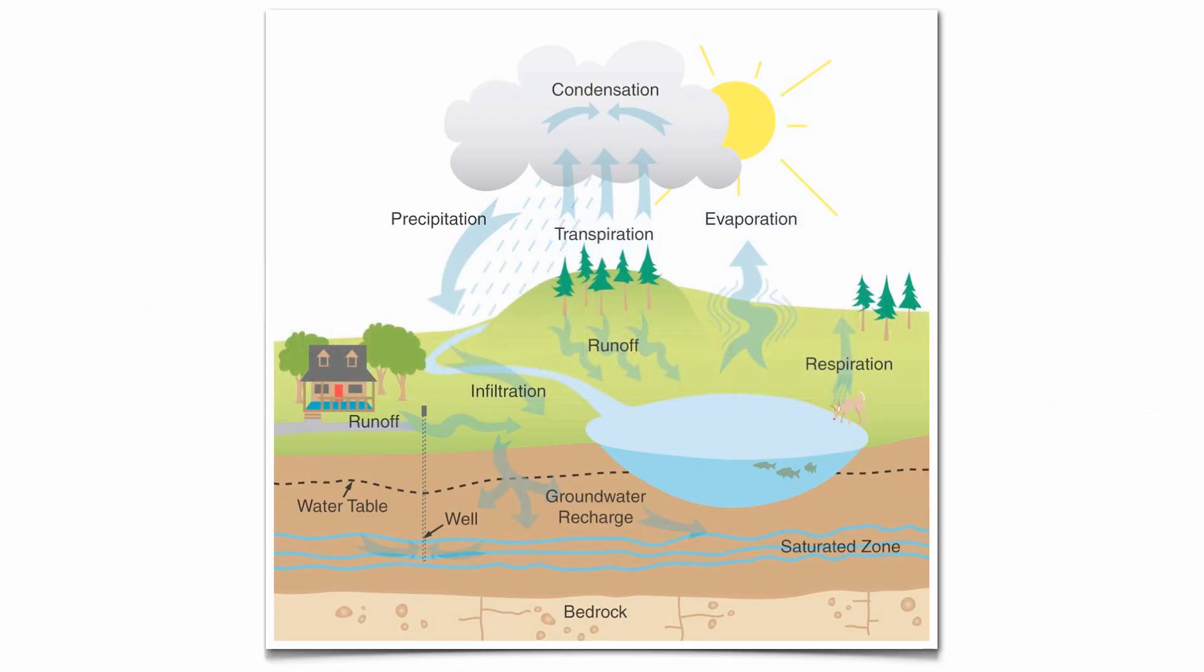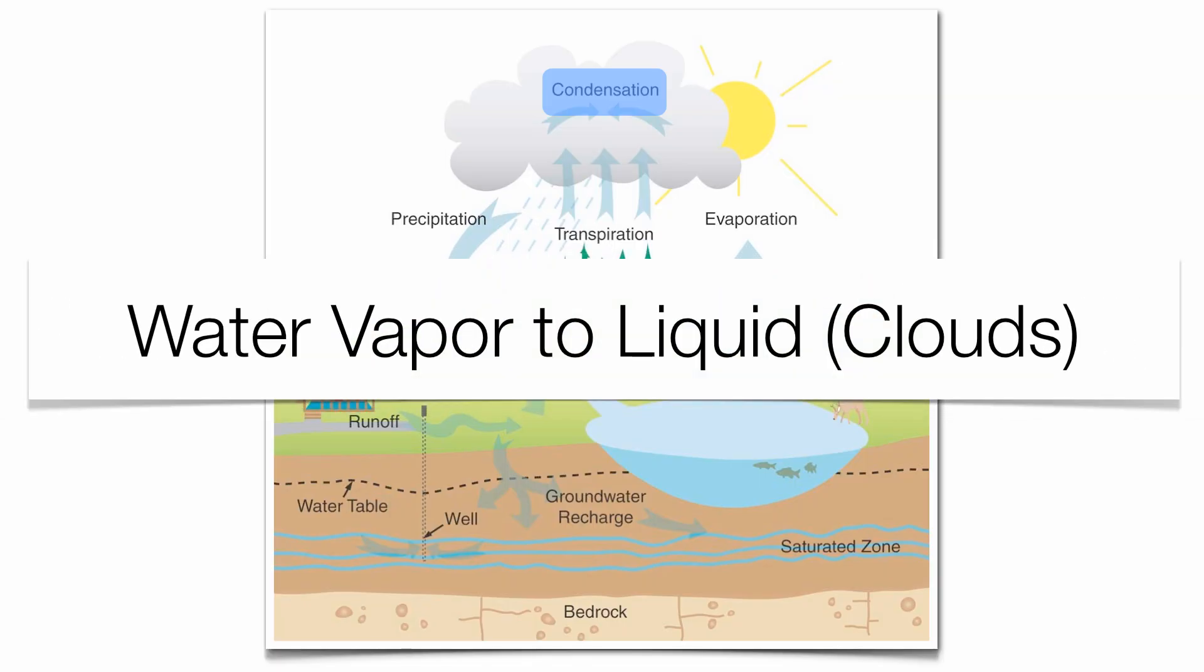Eventually, that water vapor is going to rise and cool to the dew point in the upper troposphere and you're going to get condensation. That's when water vapor is going to change to liquid and that's basically the formation of our clouds.